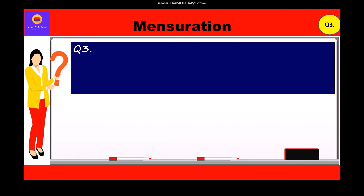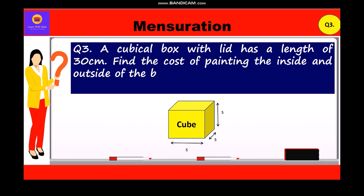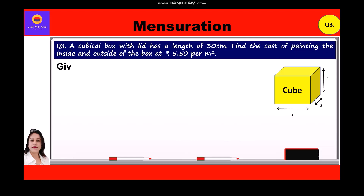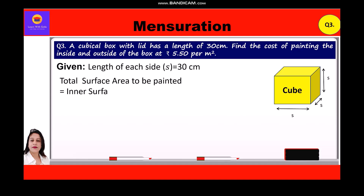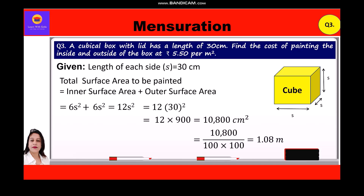Now let's take up question number 3. A cubical box with lid has a length of 30 centimeters. Find the cost of painting the inside and outside of the box at rupees 5.50 per square meter. Given: side s = 30 cm. Total surface area to be painted = inner surface area + outer surface area = 6s² + 6s² = 12s² = 12 × 900 = 10,800 square centimeters. Converting to square meters: 10,800 ÷ (100 × 100) = 1.08 square meters.